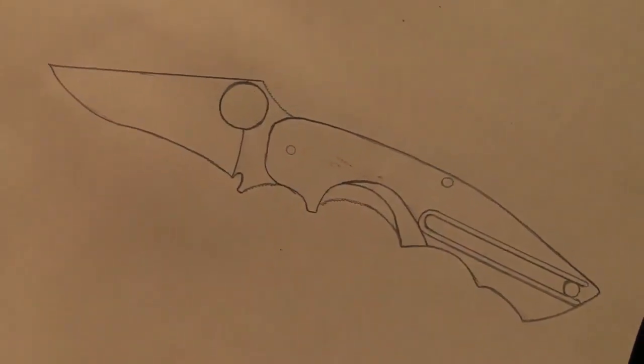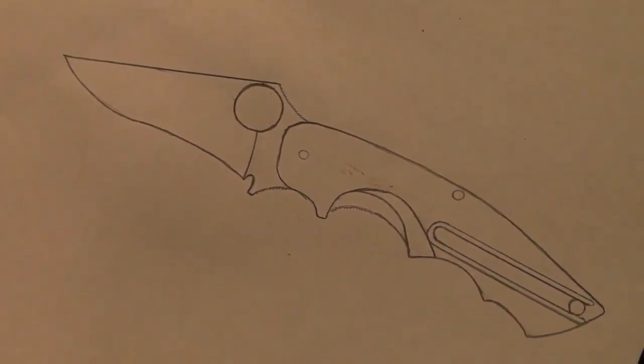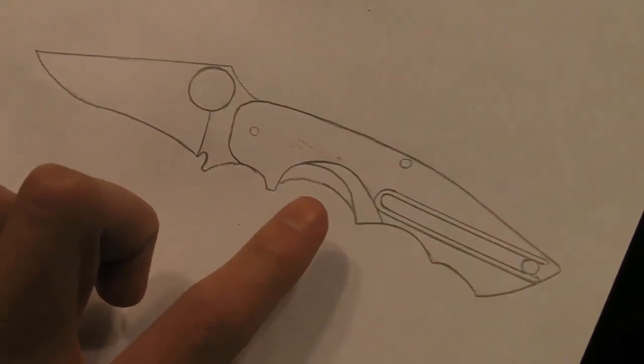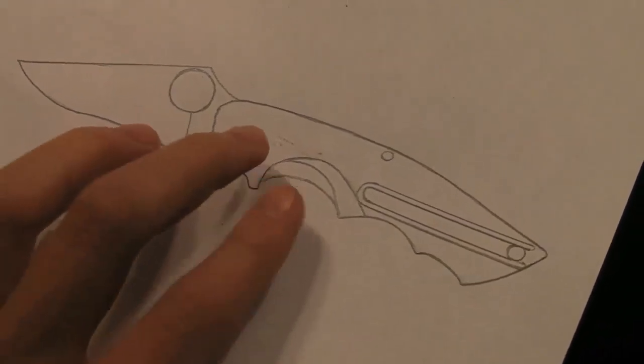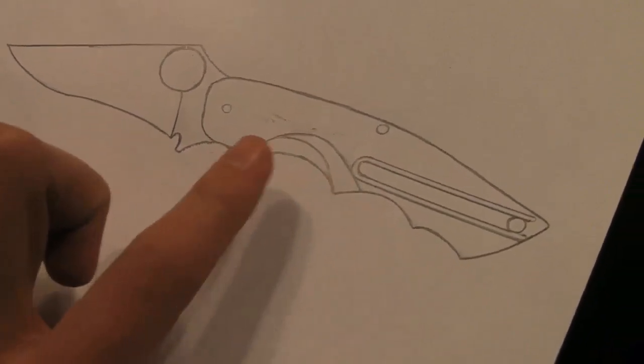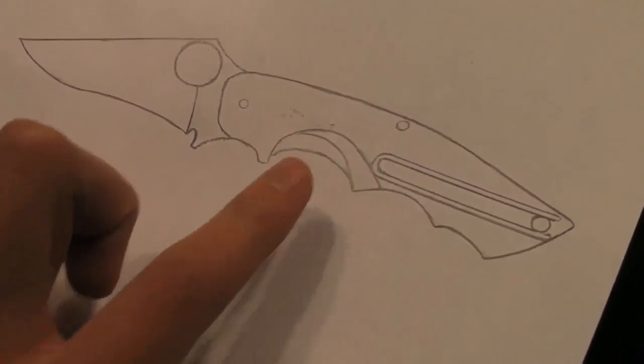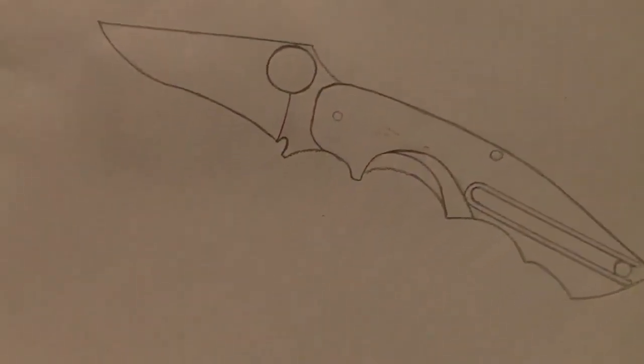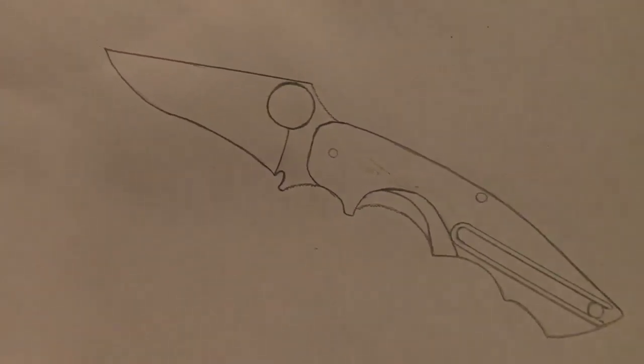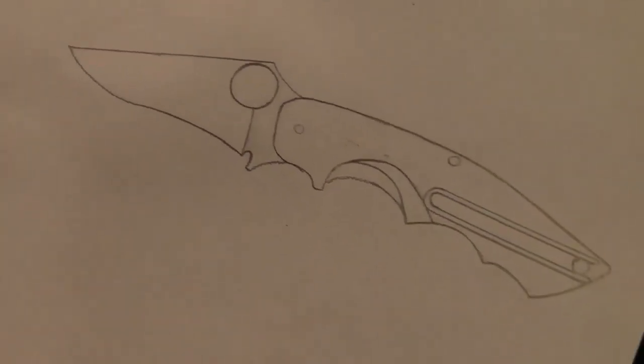I talk a little bit more about it on that picture as well on Facebook. I kind of wanted to give it maybe blue G10 handles or orange G10 handles and have it either a liner lock with two blue G10 handle scales or have one scale in G10 either orange or blue and then the other side a titanium frame lock. I think that would be super cool especially in blue or orange G10 with a frame lock, titanium frame lock.